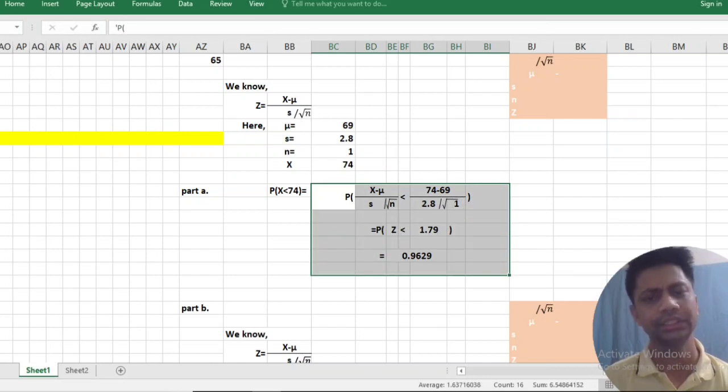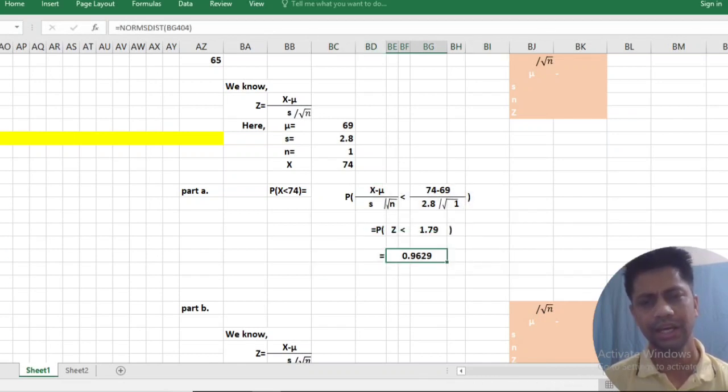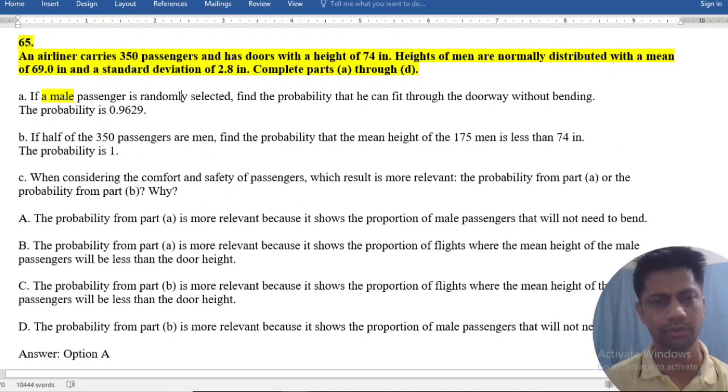We have calculated this by using Excel. You can also calculate this from the table. Part A answer is 96.29%.